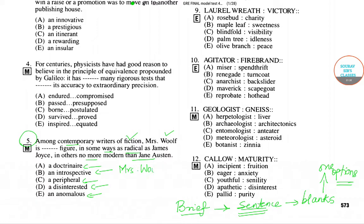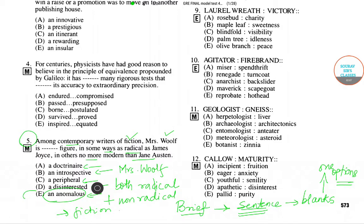Now, if Mrs. Woolf combines both radical and non-radical elements in her fiction, then she presents an anomalous — or you can also say a contradictory — image, because simultaneously both things cannot happen. So she is actually an anomalous or contradictory image. The correct answer is 'anomalous.'